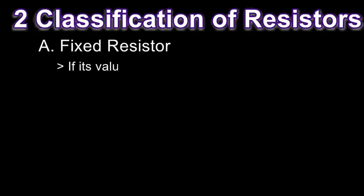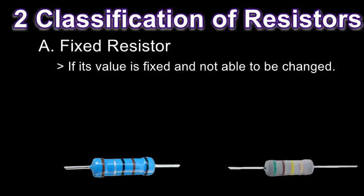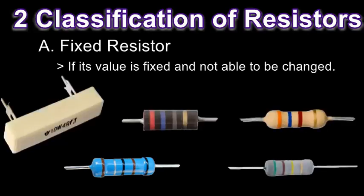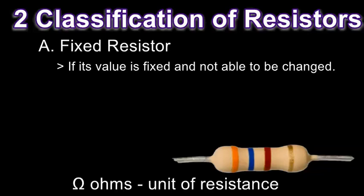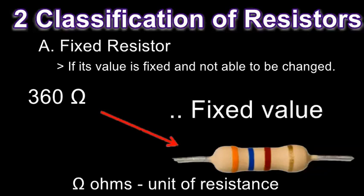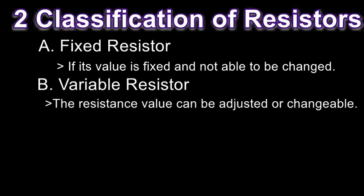When we say fixed resistor, we are referring to its value, which is fixed and not able to be changed. I'll show you examples — these are pictures of fixed resistors. Every one of them has an amount of resistance or value. For example, the value of this resistor is 360 ohms. Ohms is the unit of resistance. This 360 ohms is fixed and cannot be changed.